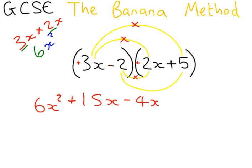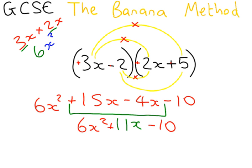The final one is 2 times 5, which is 10. But it's a minus and a plus. So it's minus 10. Now for the simplify, we have 15x take away 4x, which is 11x. So our final answer is 6x squared plus 11x minus 10.